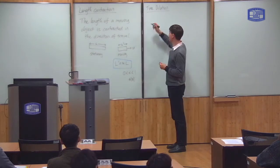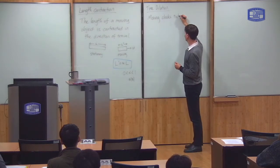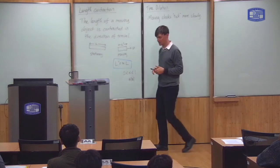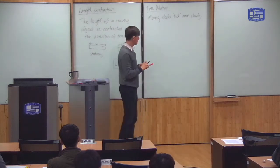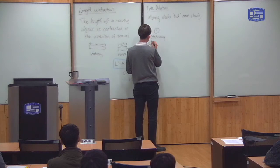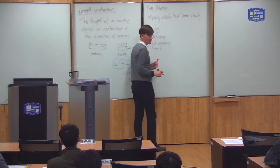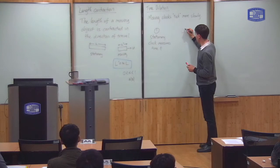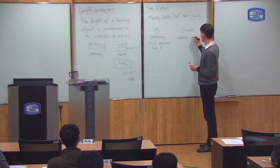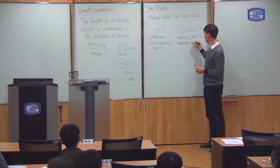Next we've got time dilation. This says that moving clocks tick more slowly. So suppose that I've got a stationary clock which measures a certain amount of time T, then an identical clock which is moving will measure less time.